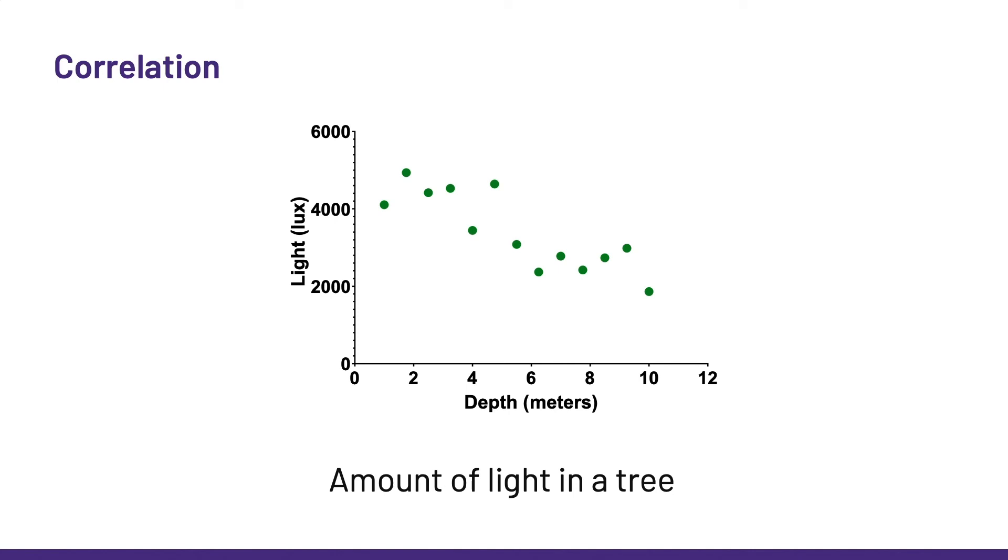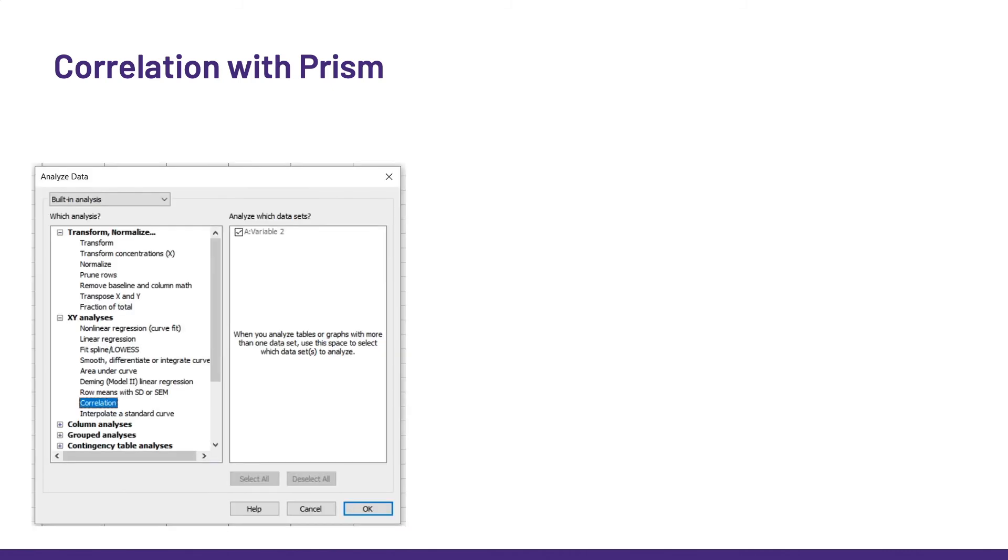Now, between you and me, you do not need to be a botanist to guess that the deeper we get from the top of the canopy, the darker it gets. Anyway. To run a correlation in Prism is super easy. After having entered the data in an X and Y format, we choose, you will never guess, correlation.